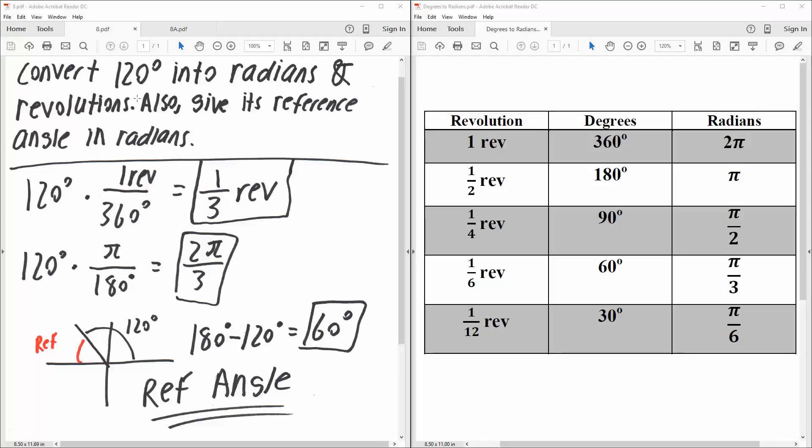So we have 120 degrees, and we want to convert to revolutions. And we know that 360 degrees is one revolution. And so if we do degrees divided by 360, we would ultimately get revolution. So 120 divided by 360 is one-third, one-third revolution.